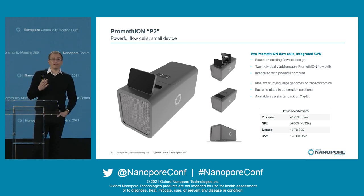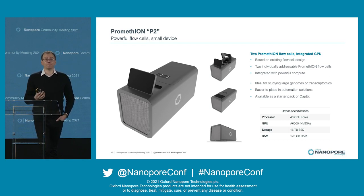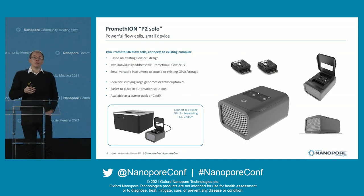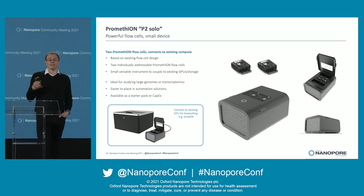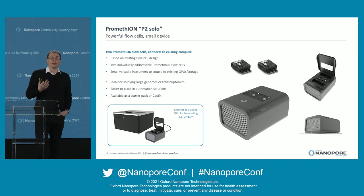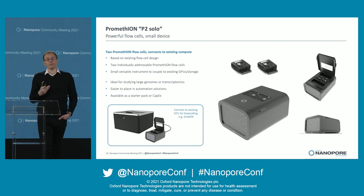One configuration is very similar to the GridION with compute built in, including GPUs to do the base calling from those two Promethium flow cells. The alternative model is the Solo — more like the classic MinION. You can connect it to existing compute to do base calling and storage of all your data. You should also be able to connect it to a GridION and utilize the GPUs there. So we think this will be an attractive product for those who have already invested in GPU infrastructure.